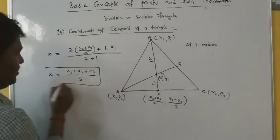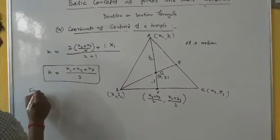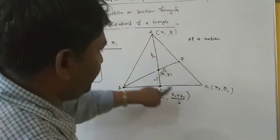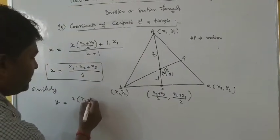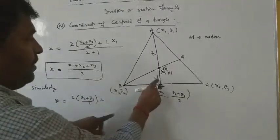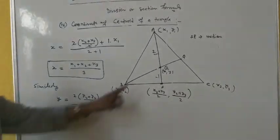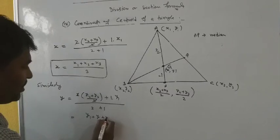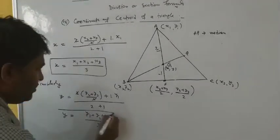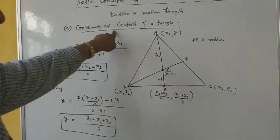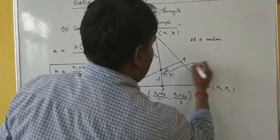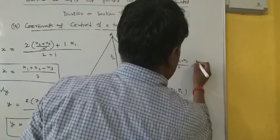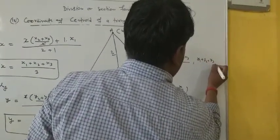So x-coordinate is (x1 + x2 + x3)/3. Similarly for y-coordinate: 2 into (y2 + y3)/2 plus 1 into y1, divided by 2 plus 1, gives y1 + y2 + y3 by 3. Thus the coordinate of centroid of a triangle is given by ((x1 + x2 + x3)/3, (y1 + y2 + y3)/3).